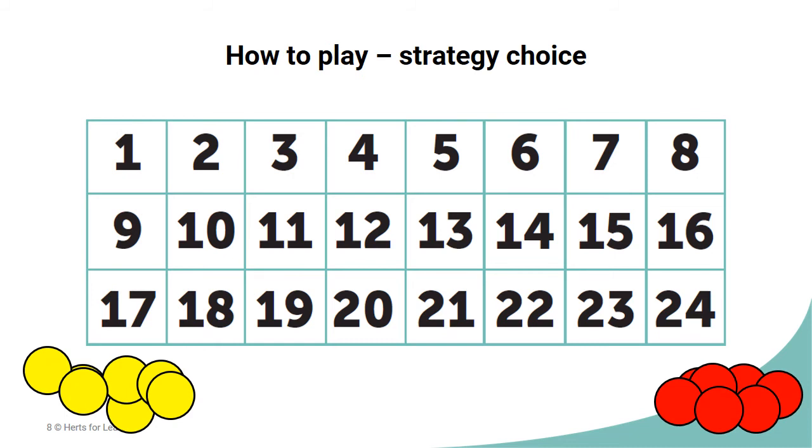As well as rehearsal of factors and multiples, this game is also really useful to increase pupils' focus on prime numbers. In both of the example games just showed, the sequence is finished on two prime numbers, 13 and 17. And in both cases, the preceding number chosen was 1.